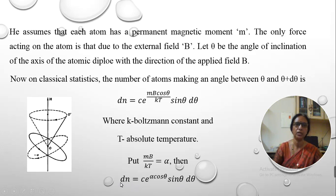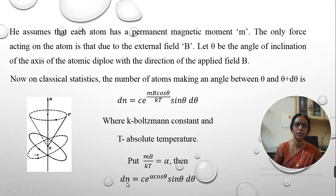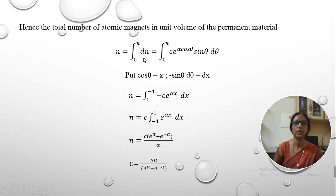Putting MB/KT as alpha, this expression reduces to dN = C · e^(α cosθ) · sinθ · dθ. Therefore, the total number of atoms across the entire inclination can be calculated by integrating this equation between the limits 0 and 180 degrees, that is 0 to pi, giving us the total number of atoms N.